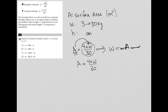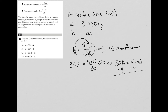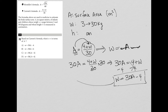We can start by multiplying both sides of the equation by 30, because that gets rid of the 30 on the right-hand side, leaving us with 30A equals 4 plus W. Then we subtract 4 from both sides to isolate W, giving us W equals 30A minus 4. That is answer choice A.